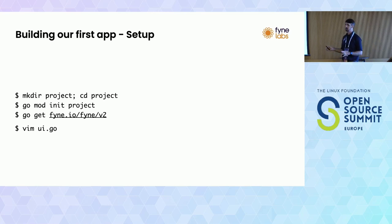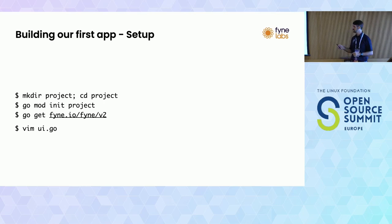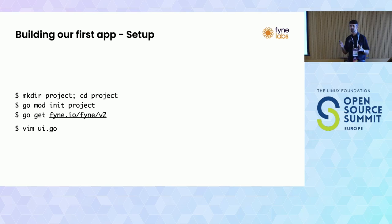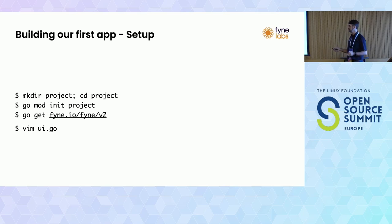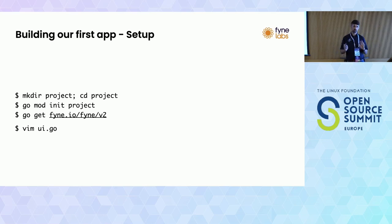So we can set up our first project. You would create a directory with the appropriate name, go into it, call go mod init and the name of your project - that sets up a module file to track dependencies. Then you go get fyne.io/fyne/v2 and that is you up and running. Assuming Vim is your favorite text editor - others are available, and I also recommend IDEs - we'll open our first Go file.